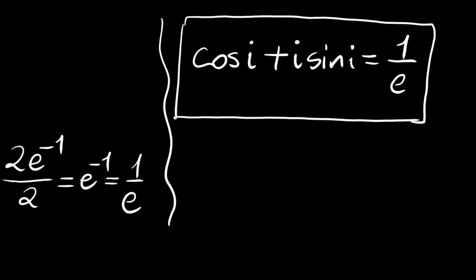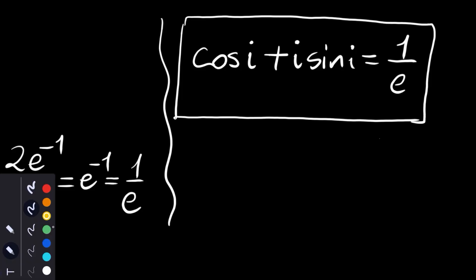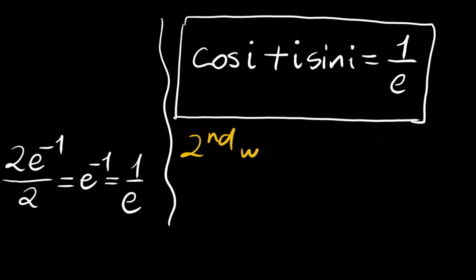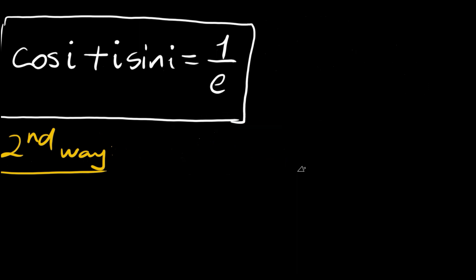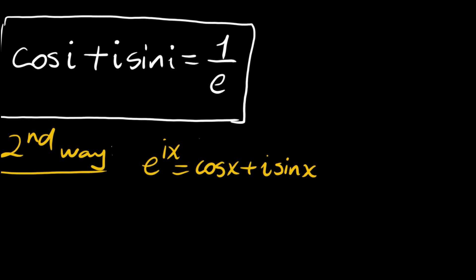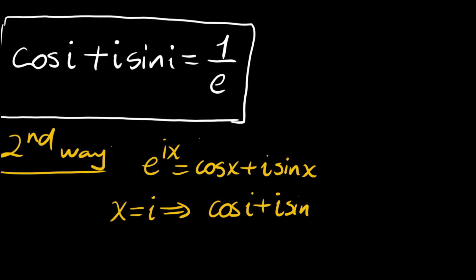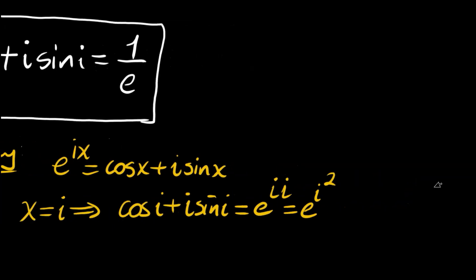So cos(i) plus i times sine(i) equals 1 over e. This very complex expression is equal to a real number. Let me show you a second method which is very fast. Using the same reasoning, e to the power of ix equals cos x plus i sine x. We want cos(i) plus i sine(i), so let x equal i. Then cos(i) plus i sine(i) equals e to the power of i times i, which is e to the i squared, and i squared is negative one, giving e to the negative first power, or 1 over e. This is very fast, but I also wanted to show you that sine and cosine functions are defined in complex numbers too. Thank you for watching and see you in the next videos.